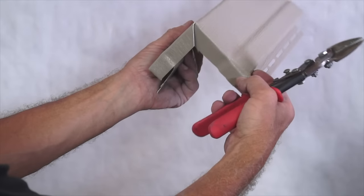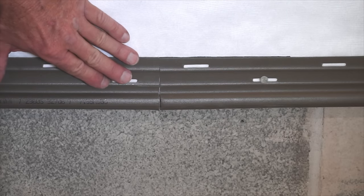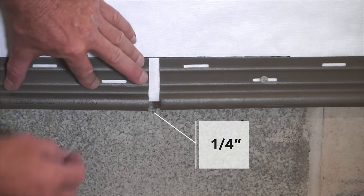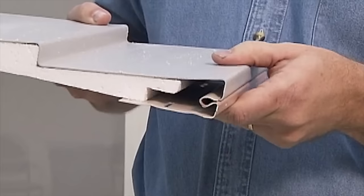You're now ready to install the starter strip. Align the top of the starter strip with the chalk line. Leave at least a 1/4 inch gap between adjacent pieces of starter strip and where the starter strip meets any corner post. Nail every 10 inches in the middle of the nailing slot.